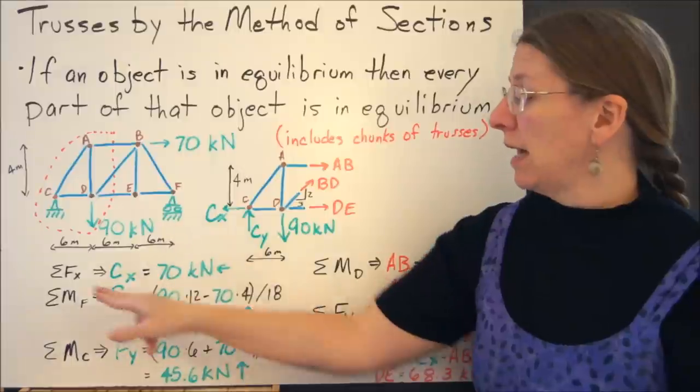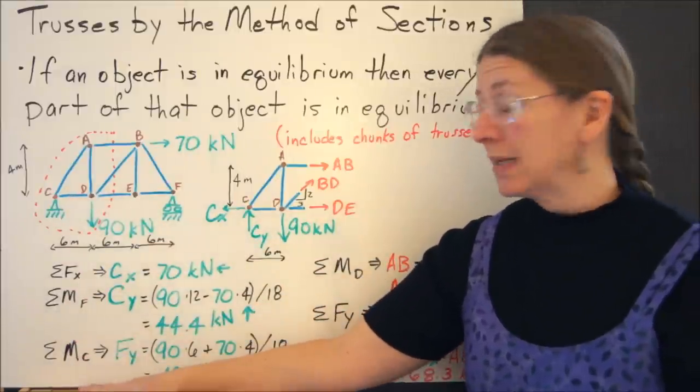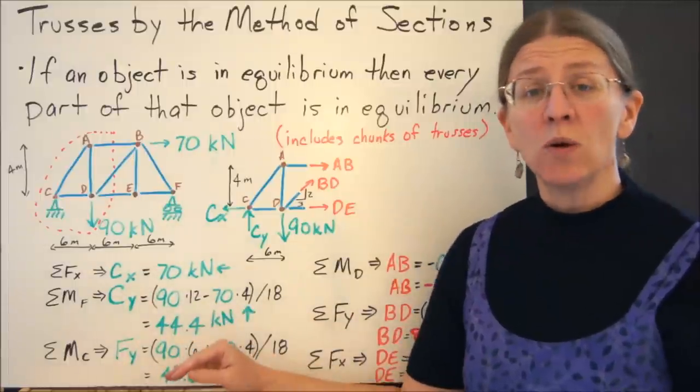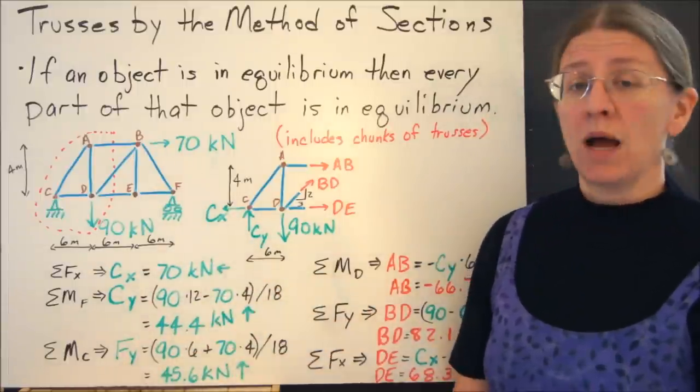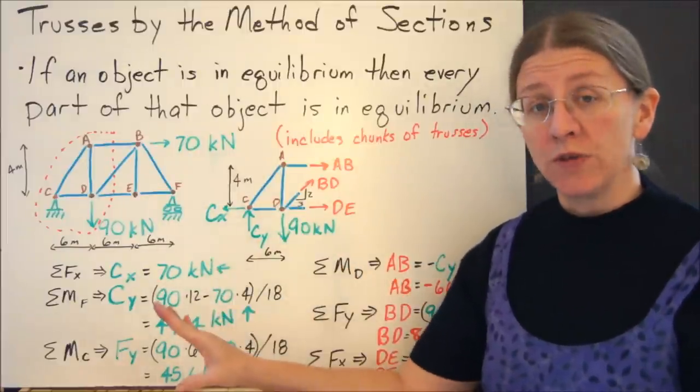If you're looking at this particular one, I can use the sum of the forces in x, the sum of the moments at F, and the sum of the moments at C. Each of those is one equation and one unknown to give me Cx, Cy, and Fy. That's the external equations of equilibrium.